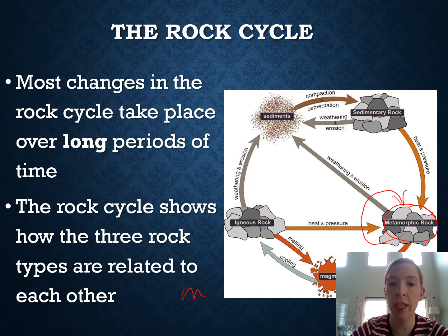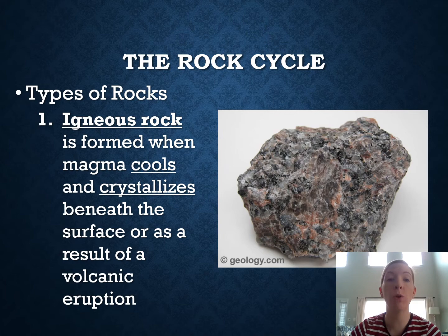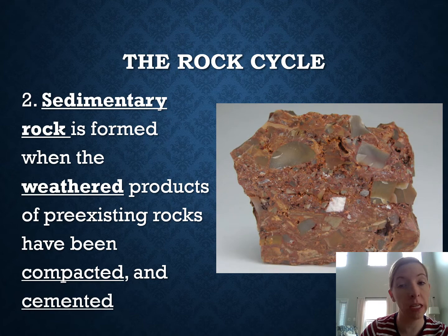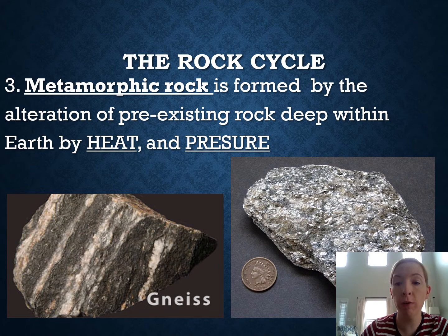An igneous rock is formed from the cooling and crystallization of magma or lava — it can happen below or on the surface. A sedimentary rock is formed from the compaction and cementing of sediments; those sediments can be very small or visible as round pebbles cemented together. Metamorphic rocks are formed from heat and pressure on an existing rock, morphing or changing it into a new rock.